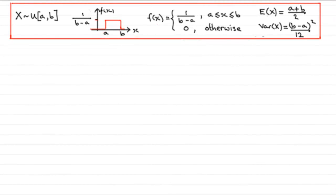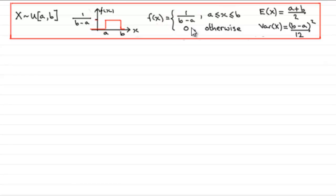Welcome to this tutorial where I'm going to prove to you what the variance of x is for a random variable x which is distributed as a uniform continuous distribution between the values of a and b. We should be familiar with its graph, and the probability density function is defined as f of x equals 1 over b minus a when x is greater than or equal to a but less than or equal to b, and zero otherwise.